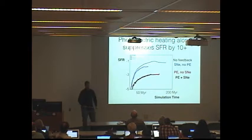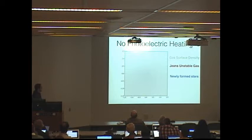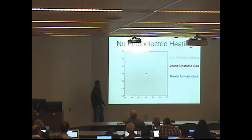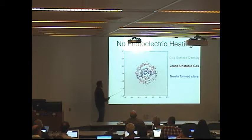So how is this working? Let me show you what happens in one of these galaxies. If I don't have photoelectric heating, the gray here is the gas surface density, red is regions where the gas is unstable and eligible to form stars, and blue is the newly formed stars. You can see that without photoelectric heating, the gas collapses, cools, and forms a ton of stars.